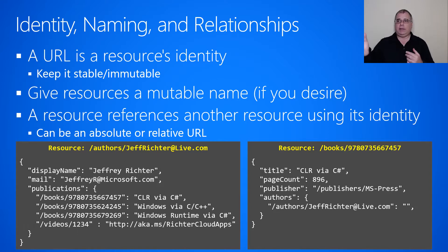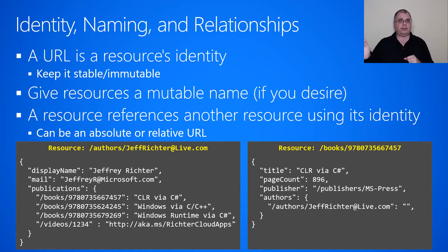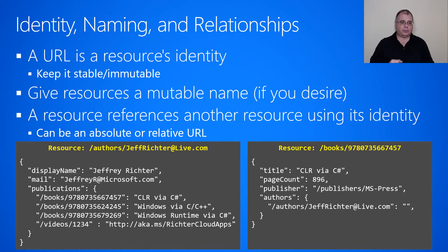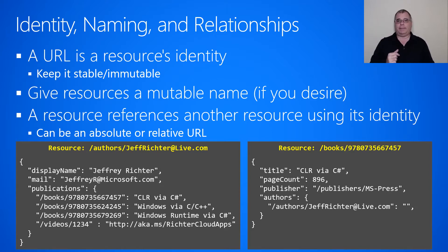I should be able to create a resource at this URL today, and 100 years from now, I should be able to use that same URL to get or delete that resource. It should be stable and identify that resource over time. So that means you can't put an ID in a URL that might change over time. That ID is the key to the resource, and it has to be immutable too.